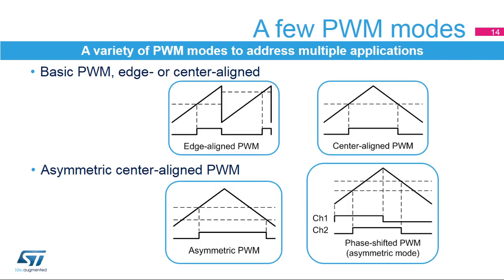This slide presents some of the PWM modes. The standard edge-aligned PWM mode is programmed with the auto-reload register defining the period and the compare register defining the duty cycle, the counter being in up-only or down-only counting mode. A single timer can generate up to four PWM signals with independent duty cycles and identical frequency.